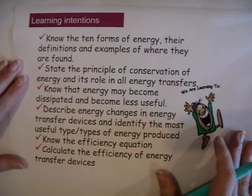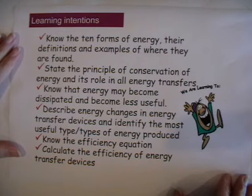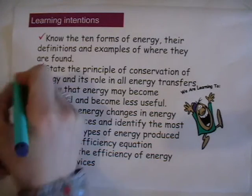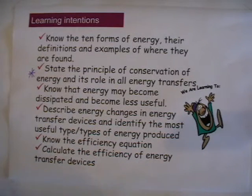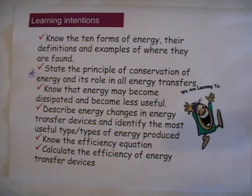Let's look again at our learning intentions. By now you should know the ten forms of energy, their definitions, and examples of where they are found. You should be able to state the principle of conservation of energy and understand its role in all energy transfers. You should know that energy may become dissipated and less useful, and that this still fits with the principle of conservation of energy. You should know the efficiency equation — useful energy out divided by total energy in — and be able to calculate the efficiency of energy transfer devices.